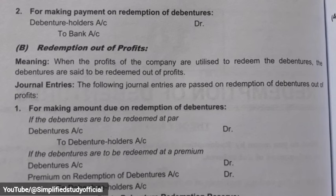The next entry for actual payment is: Debenture Holder Account debit to Bank Account. This represents the actual cash payment made to the debenture holders upon redemption.